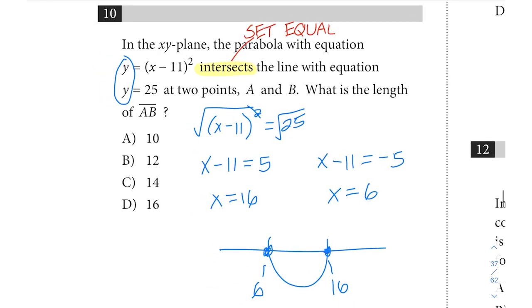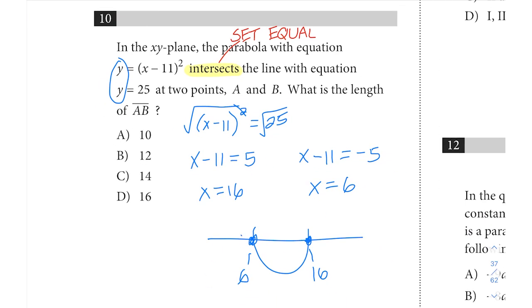So if this is at 6 and this is at 16, the question is asking us what's the length of AB, meaning how far apart are these. And we can see that these would have a horizontal distance between them of 10. 16 minus 6 gives us 10.